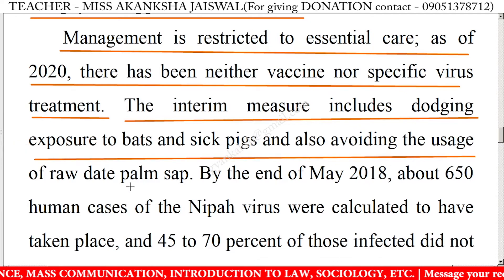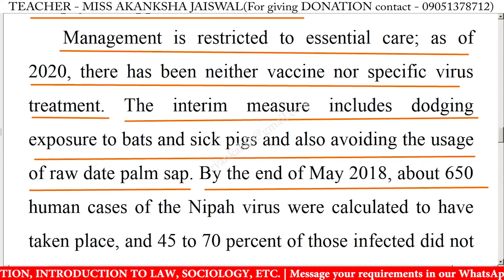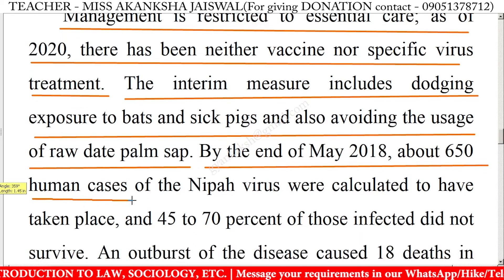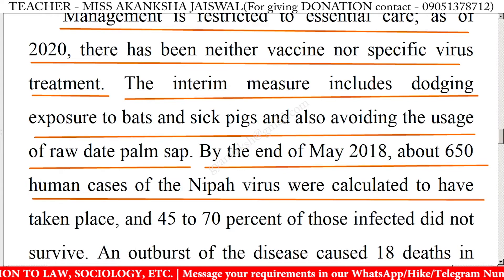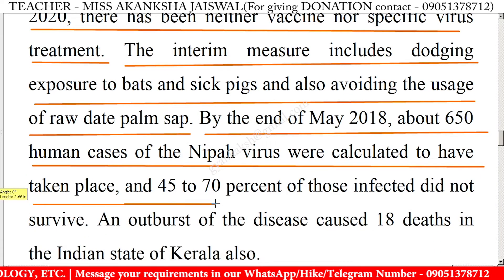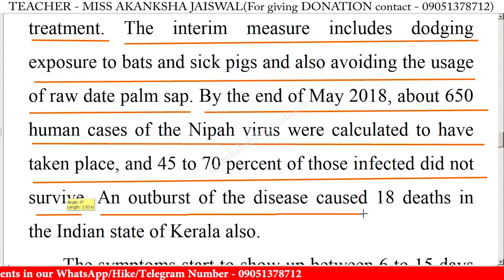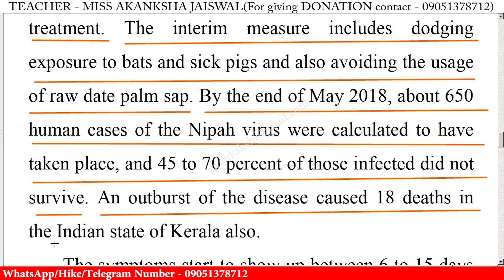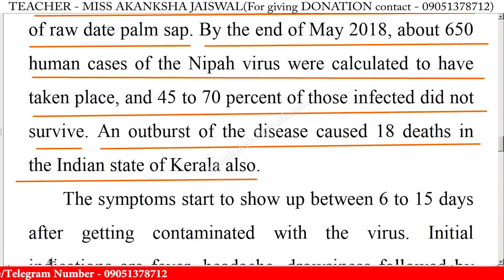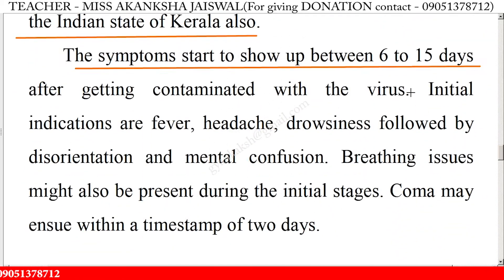Interim measures include avoiding exposure to bats and sick pigs, and avoiding the usage of raw date palm sap. By the end of May 2018, about 650 human cases of Nipah virus were recorded, and 45 to 70 percent of those infected did not survive. An outbreak of the disease caused 18 deaths in the Indian state of Kerala.